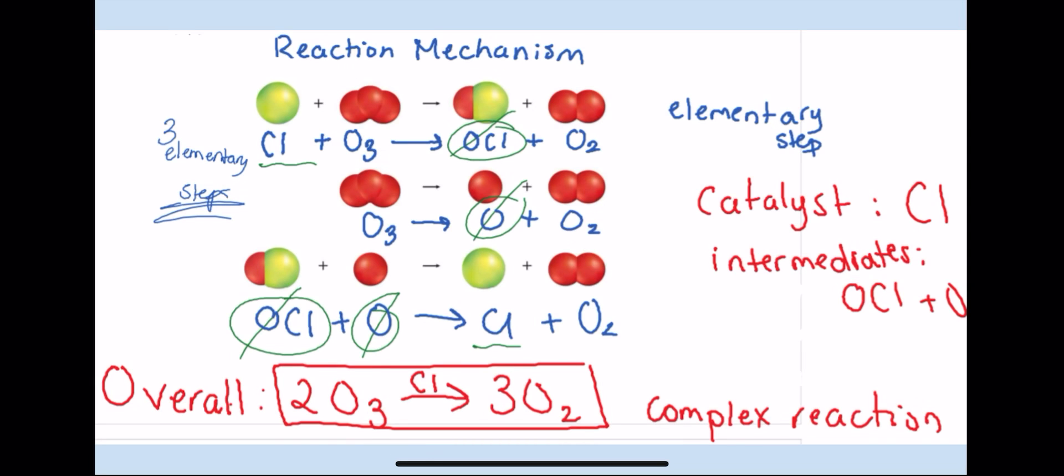So as you can see in this reaction mechanism, this is called a reaction mechanism. It consists of three steps. It's also a complex reaction because it consists of two or more steps. So one line of this, or one step, is called an elementary step, and this consists of three different reactions or three different elementary steps. So you have a catalyst, which is Cl, and two intermediates, which are OCl and O.